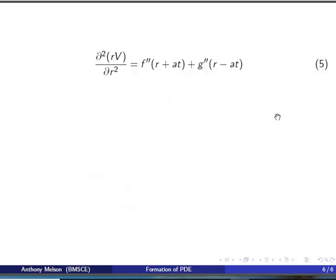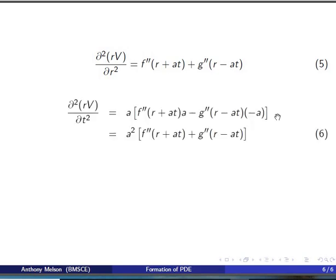Similarly, the second order derivatives are ∂²/∂r²(rV) and ∂²/∂t²(rV) which simplifies to a²[f''(r+at) + g''(r-at)].